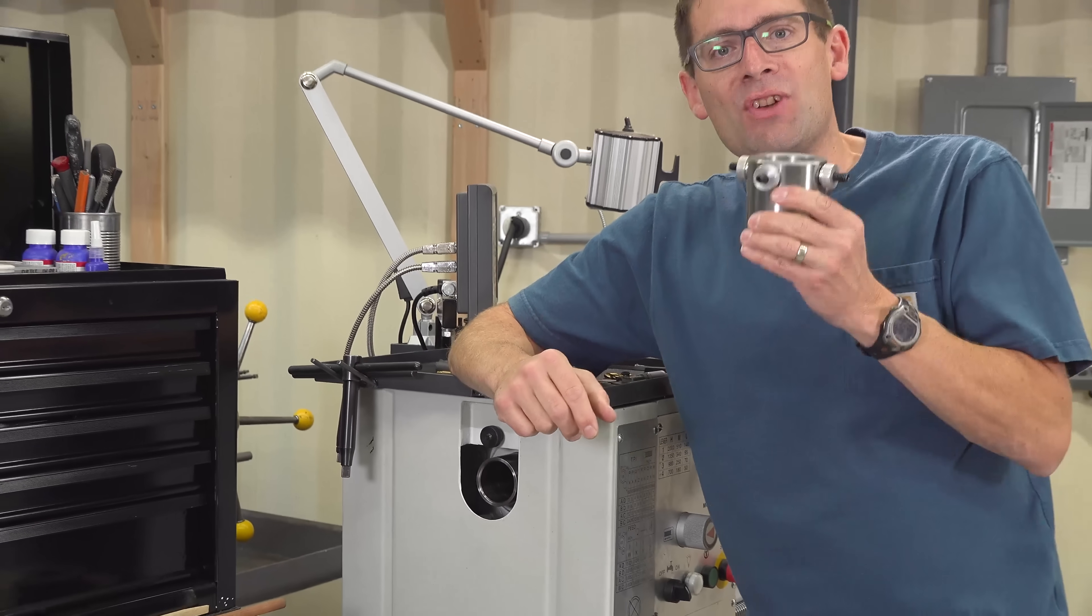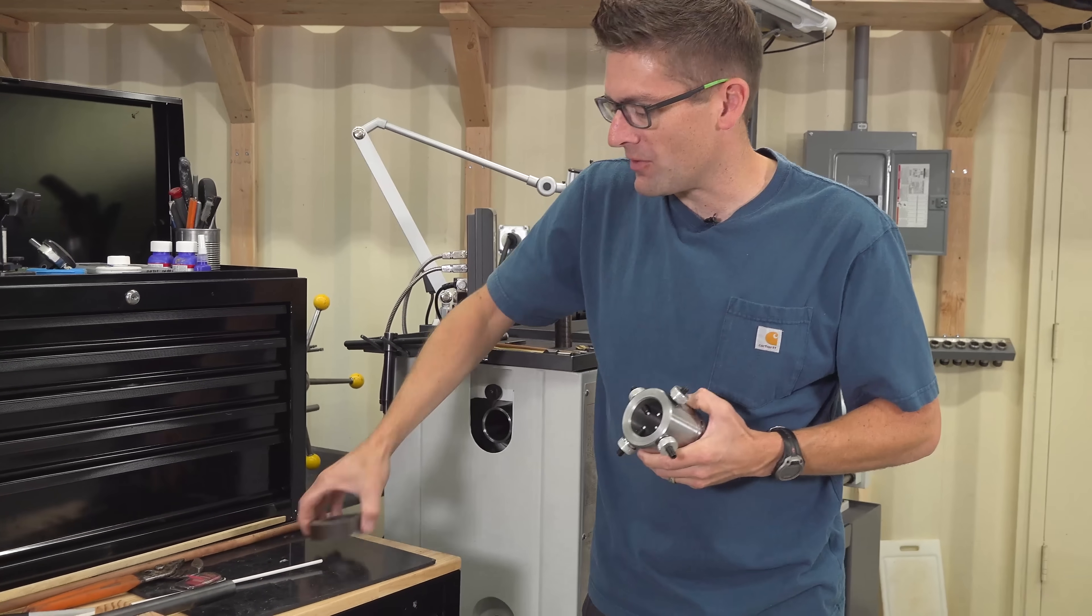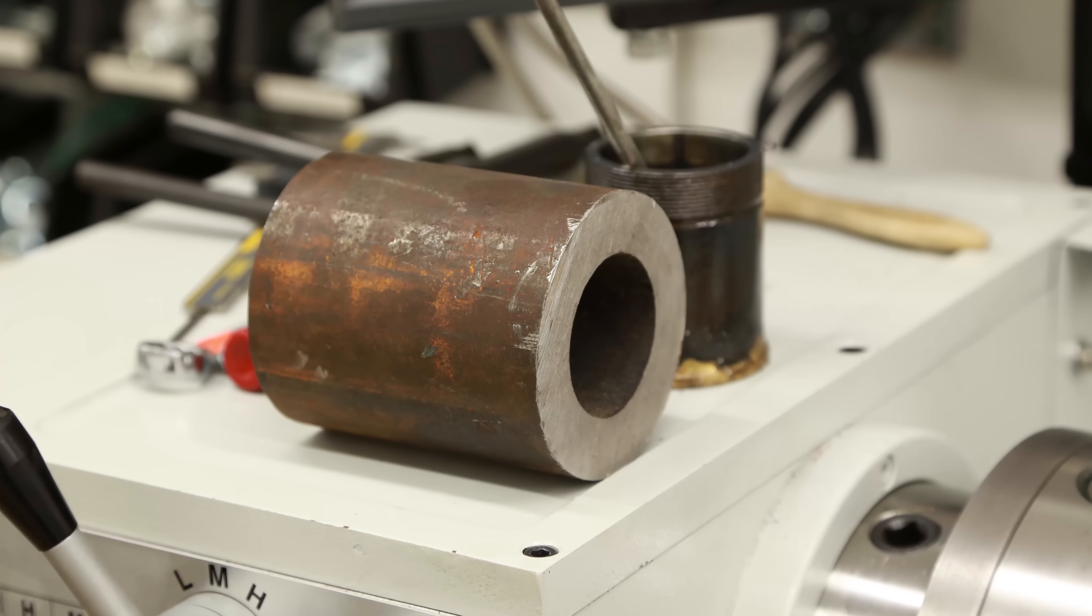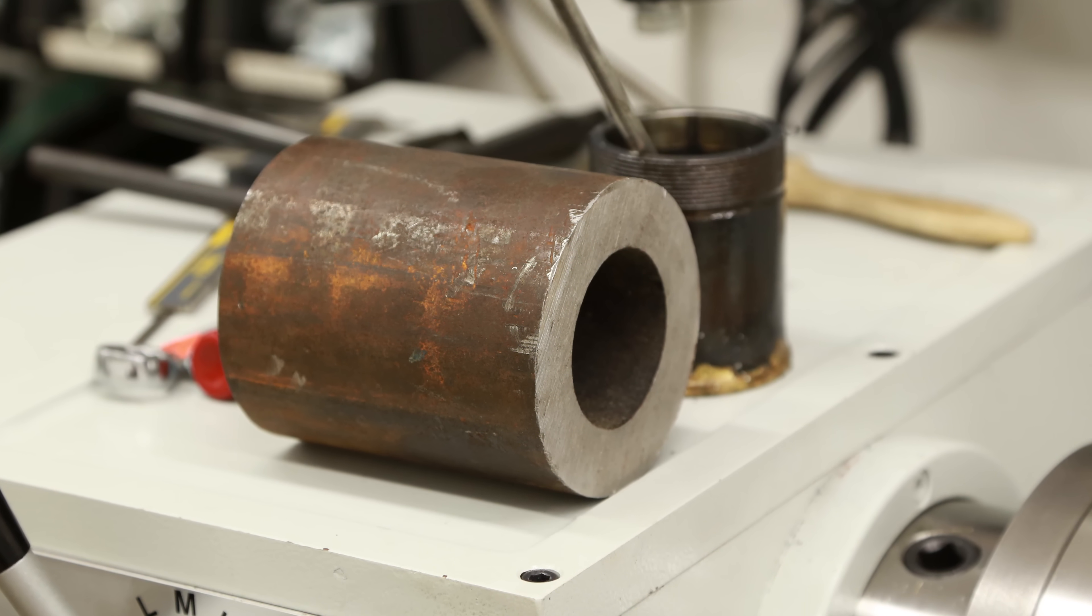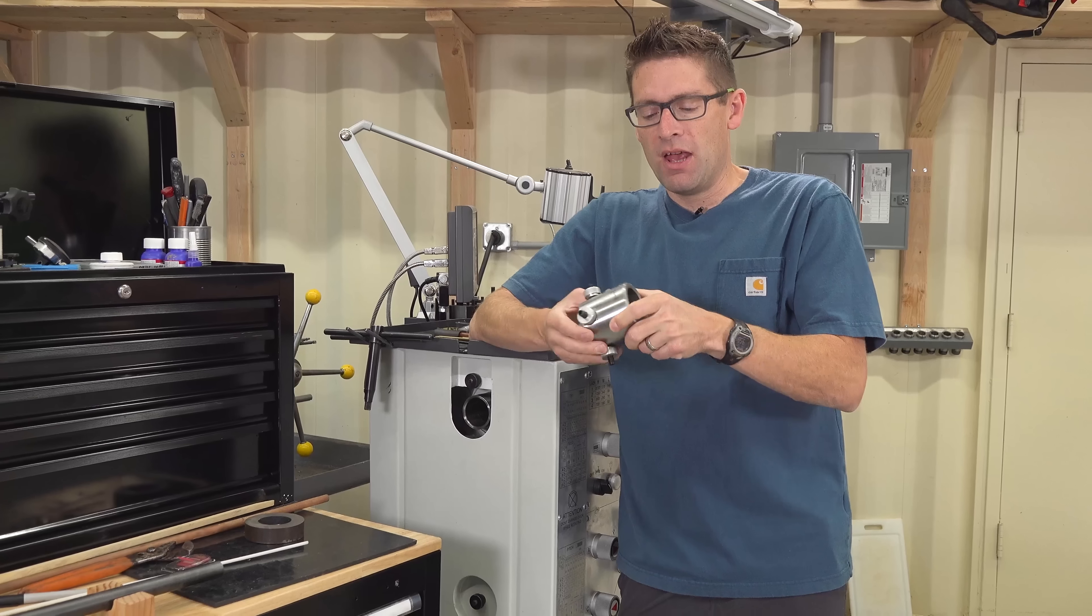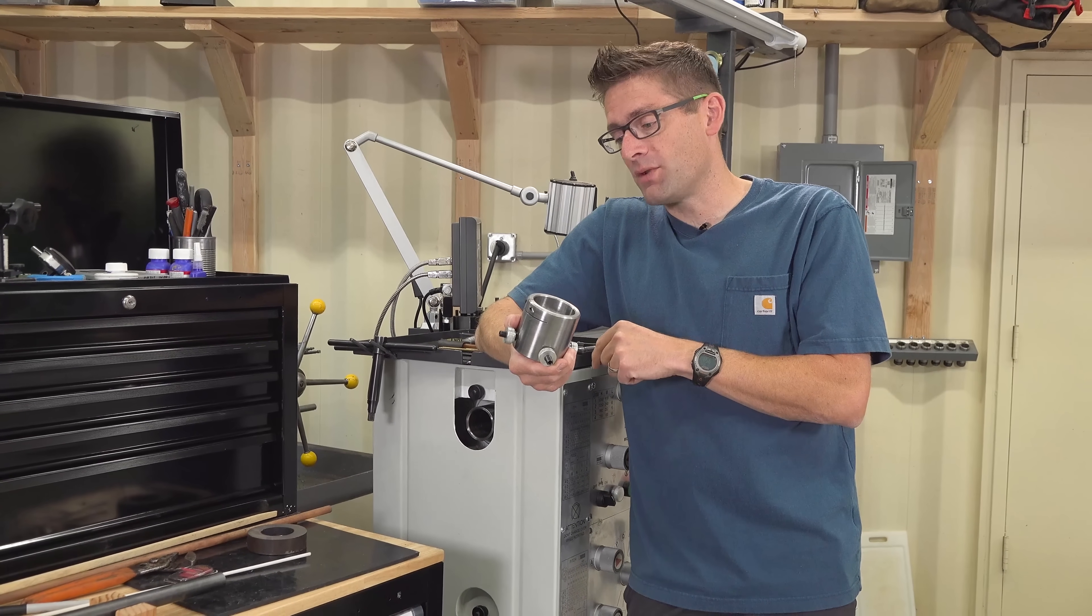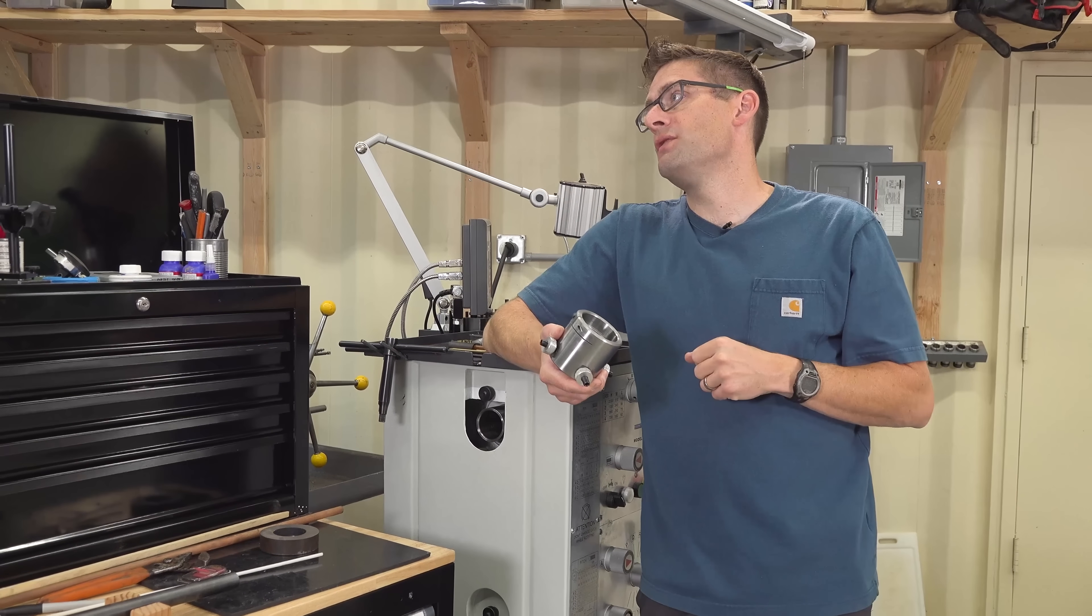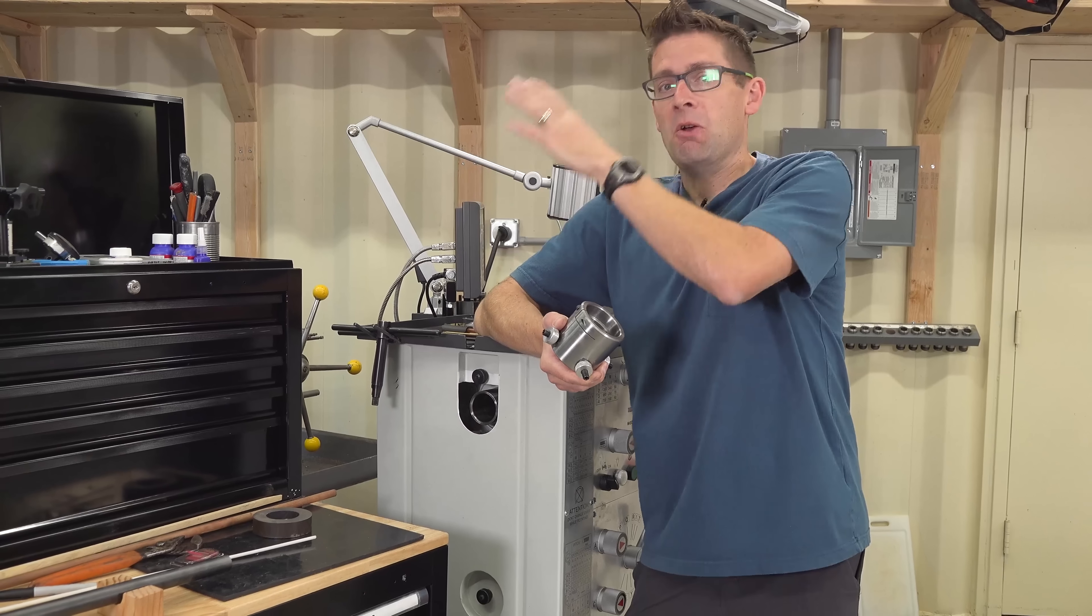The spider started as a large chunk of drawn over mandrel tubing. It was about five, six inches long. And I went through a sequence of several steps to put together this spider. This was the first project that I did on the PM 1440 GT and it was the first project that I also used the PM 949 TV milling machine for.